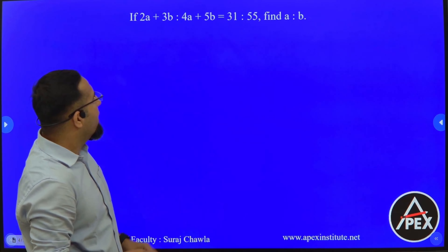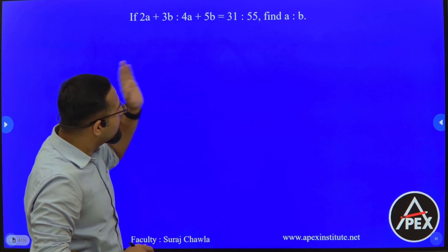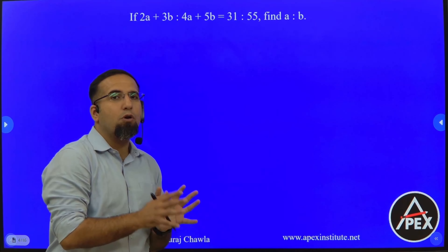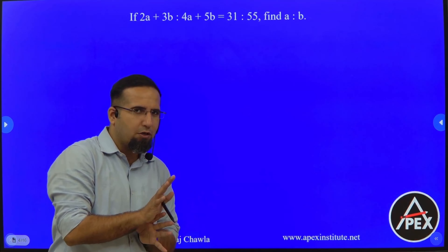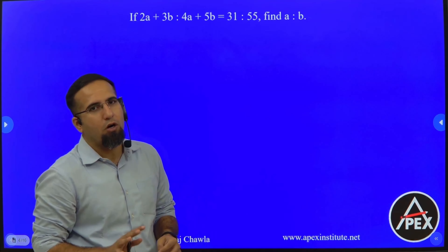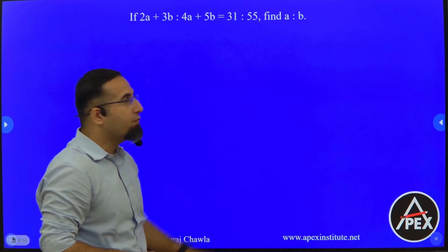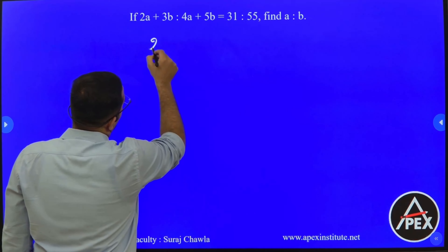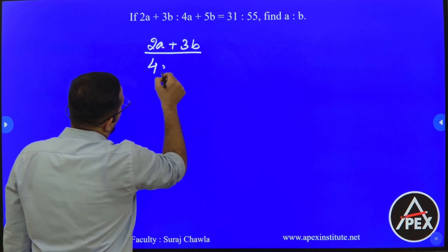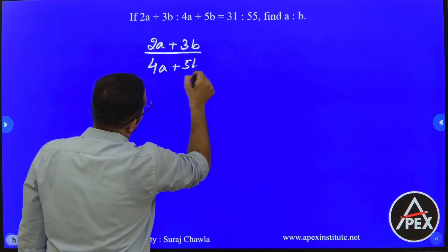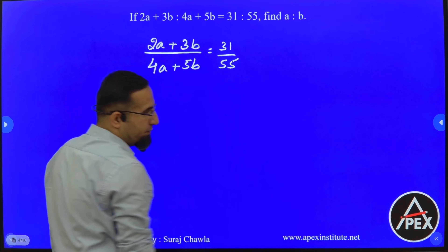Now in this question we are given: 2A plus 3B is to 4A plus 5B is equal to 31 is to 55. It is a similar question to the previous one — an equation without a constant — which means I should be able to get the ratio of A is to B. So I write 2A plus 3B divided by 4A plus 5B, which is equal to 31 is to 55.